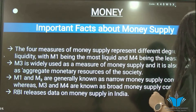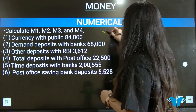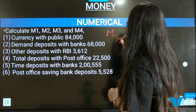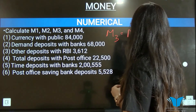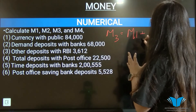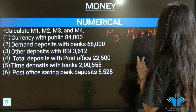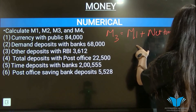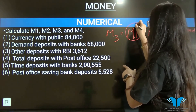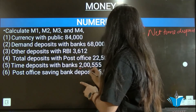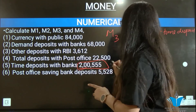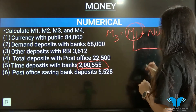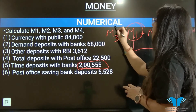Now let's look at the numerical. To calculate M3, you first calculate M1, then add net time deposits. Net time deposits in India are 2,555. So you add net time deposits to M1 to get M3.